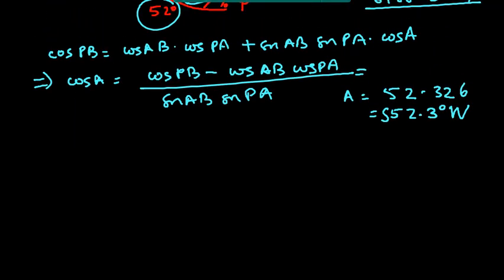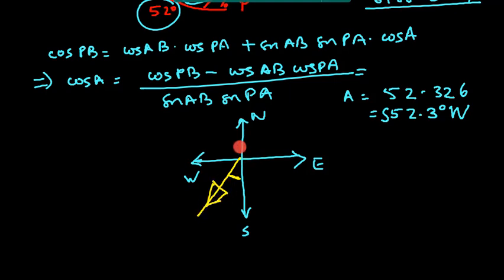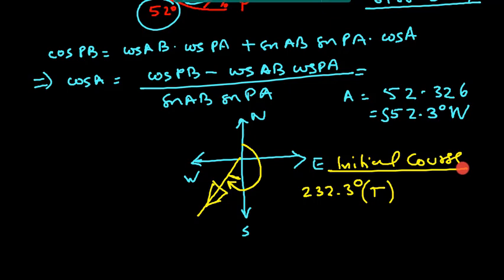If it is southwest and this is north, this is south, this is east and this is west, my ship is somewhere here. Actually I have obtained this value. So a ship is heading this direction. All I have to do is just find this angle. So this is going to be 180 plus 52.3 is equal to 232.3 degrees. So that is the initial course. This is initial course.